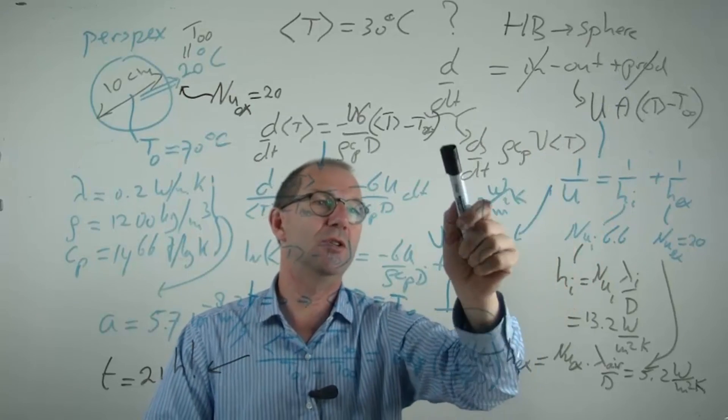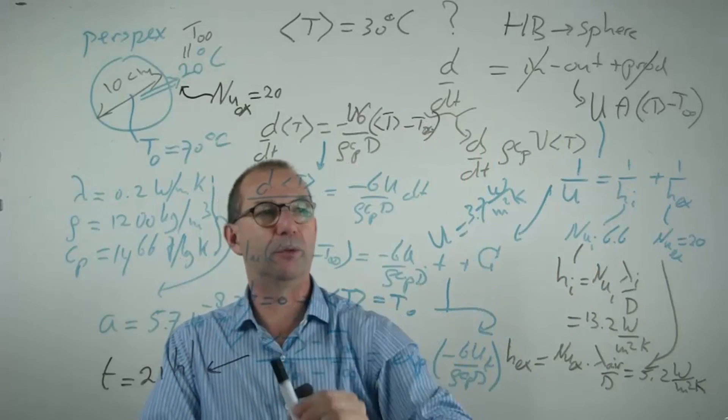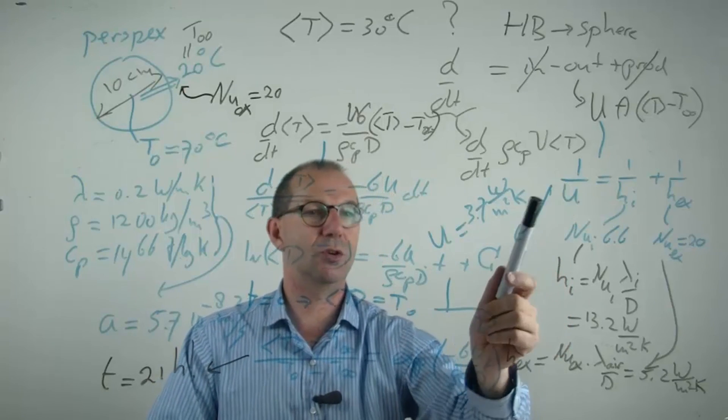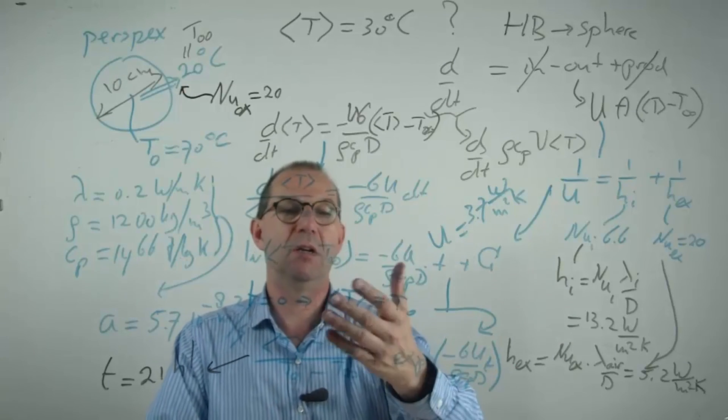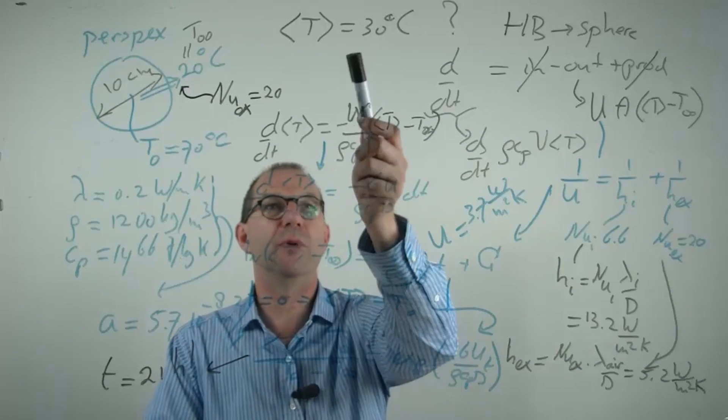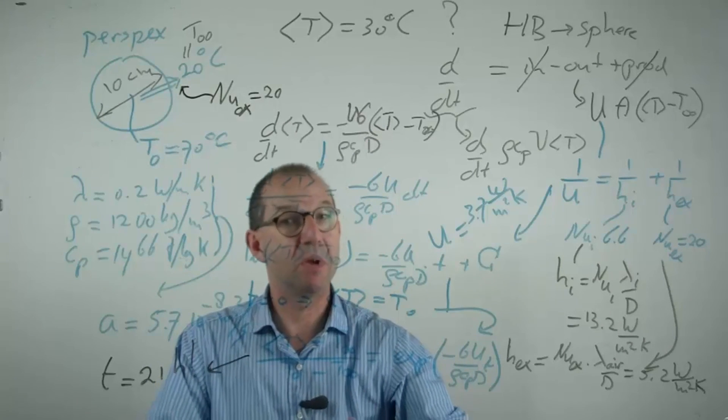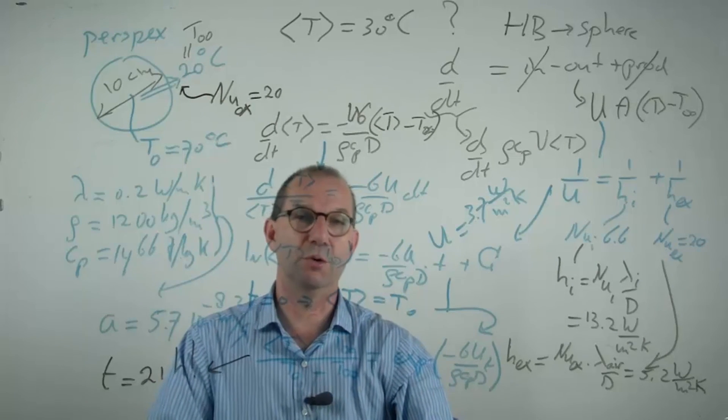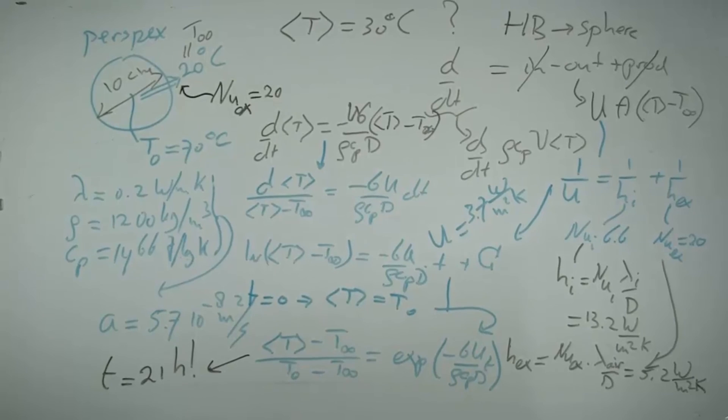Compute the change of the internal energy as heat is flowing out. Try and solve my differential equation. Look carefully at the overall heat resistance or the overall heat transfer coefficient. Solve my differential equation. Fill in the knowns to find the unknown time of 21 hours. This one is obviously quite a bit tougher than the earlier one where you could use the graphs.